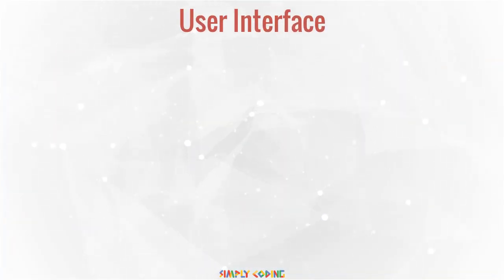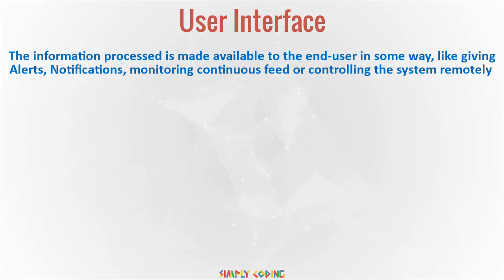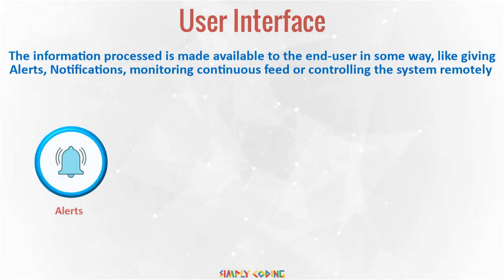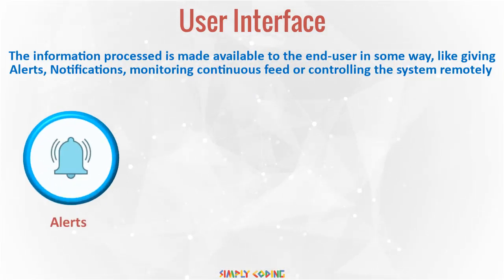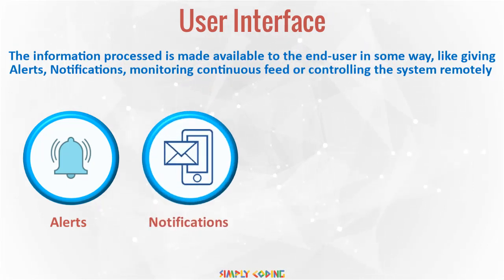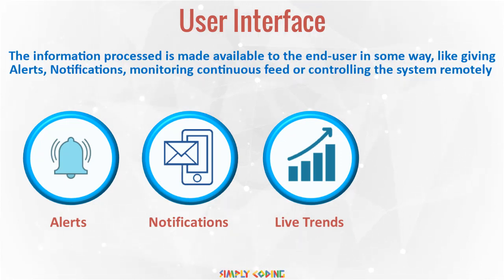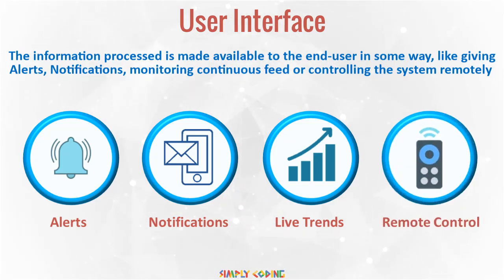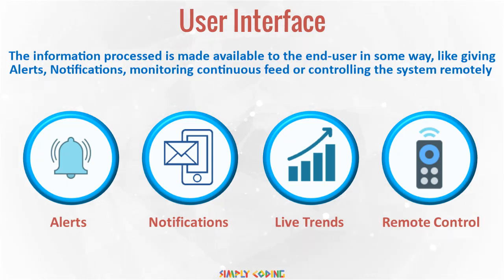Next is the user interface. The information processed is made available to the end user in some way, like an app which can trigger alarms or send them notifications through email or text messages. It might provide the user with an actual live feed or show trends, etc. The application could also provide an interface to send instructions back as well, like resetting the temperature or releasing the water to plants based upon a moisture reading.